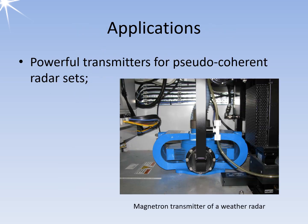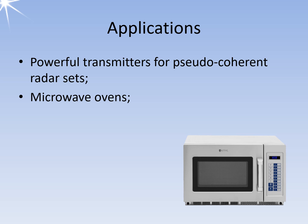Magnetrons are still inexpensive high-power oscillator transmitters for radar sets but have disadvantages in radar signal processing. Special microwave ovens fitted with magnetrons are used for industrial heating and drying but also in the catering industry and in the home for heating food.